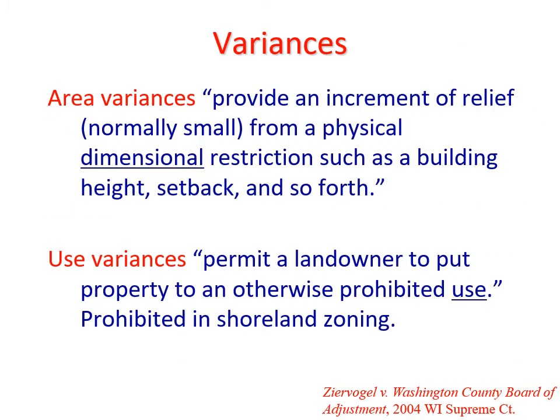We have two types of zoning variances in Wisconsin: area variances and use variances. Area variances provide an increment of relief, normally small, from a physical, dimensional restriction such as a building height, setback, and so forth. For instance, if a roadway setback is 50 feet, a property owner may apply for an area variance to build 45 feet from the road. Use variances permit a landowner to put property to an otherwise prohibited use — for instance, allowing a racetrack in an area zoned residential. Use variances are rare and problematic for reasons described in the zoning board handbook.